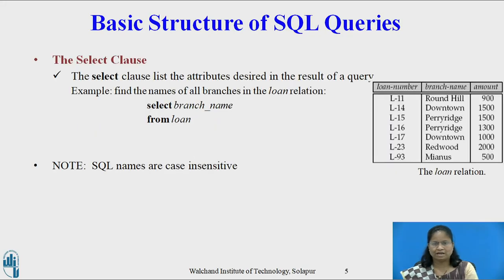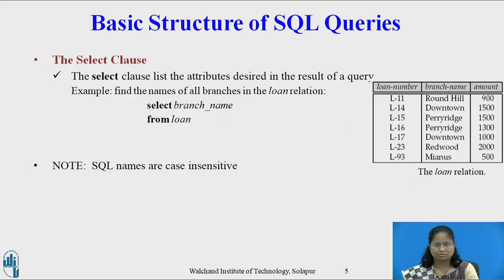The SELECT clause lists the attributes desired in the result of a query. Example: find the name of all branches in the loan relation. SQL command: SELECT BRANCH_NAME FROM LOAN. The result is a relation consisting of a single attribute with the heading BRANCH_NAME. SQL names are case-insensitive — we may use uppercase or lowercase letters.